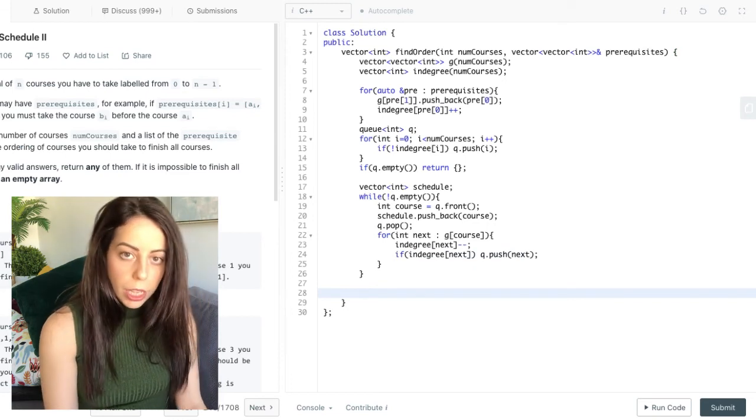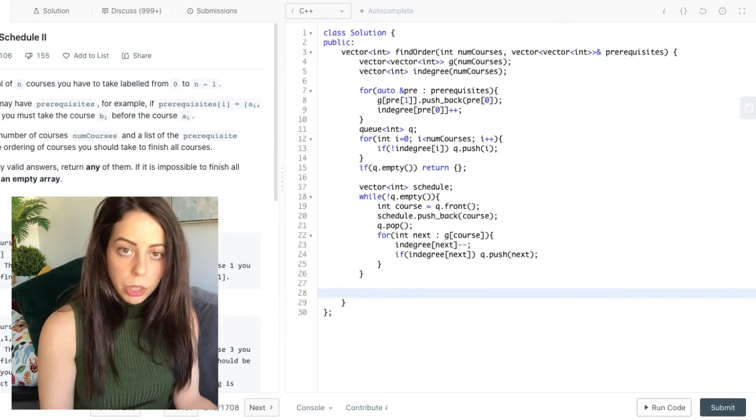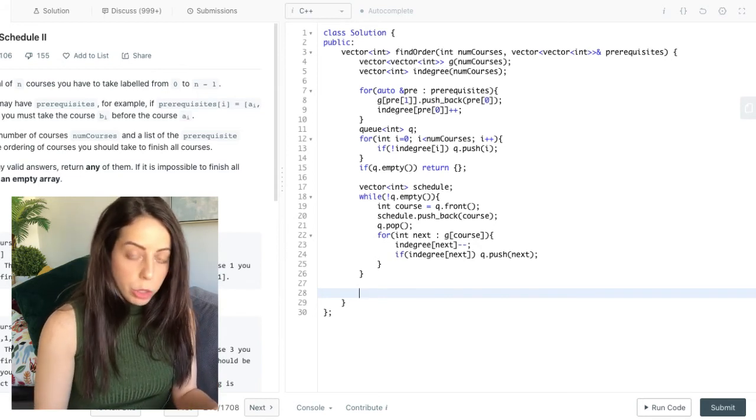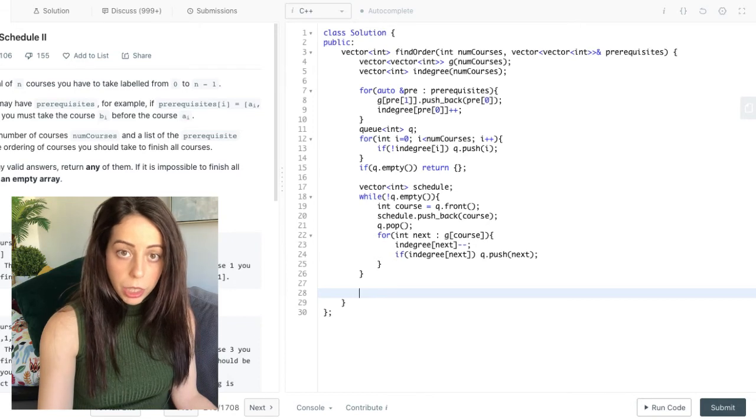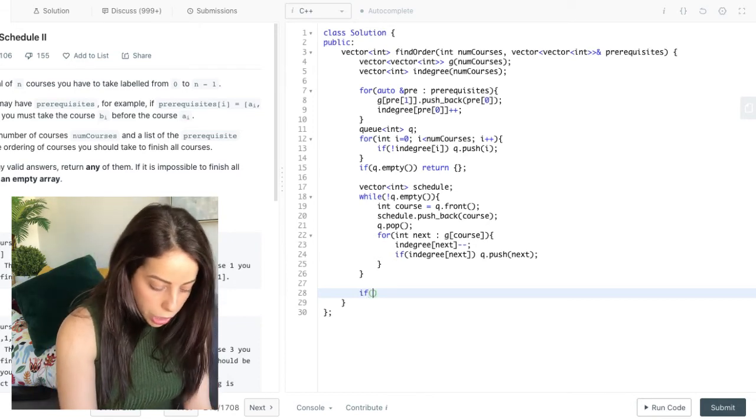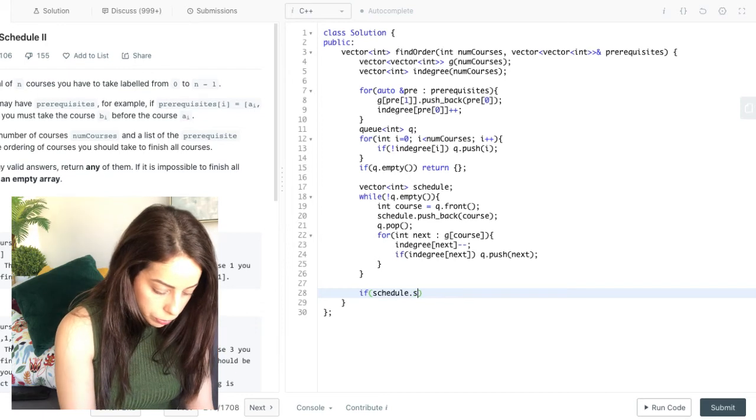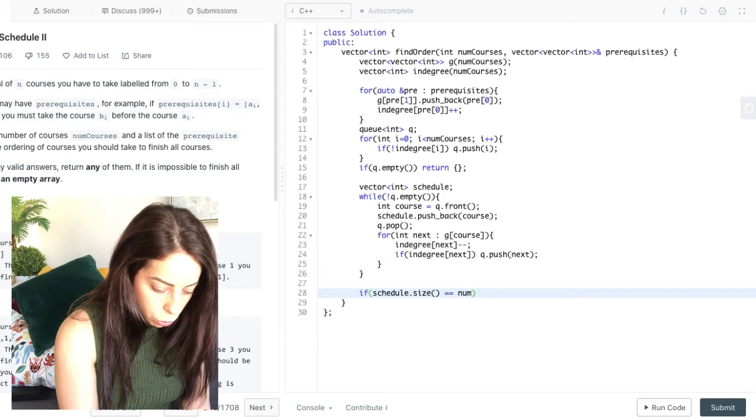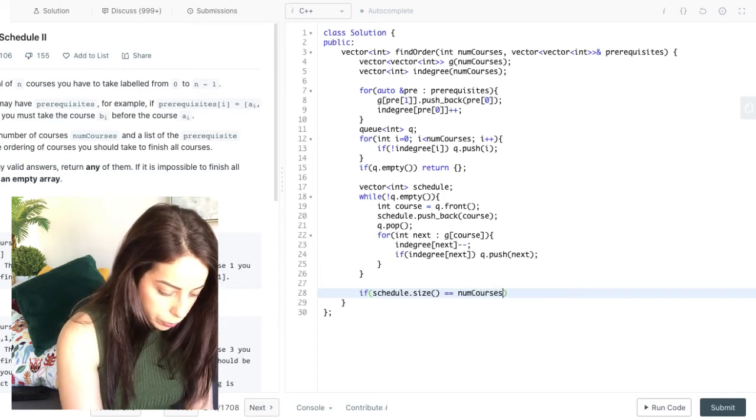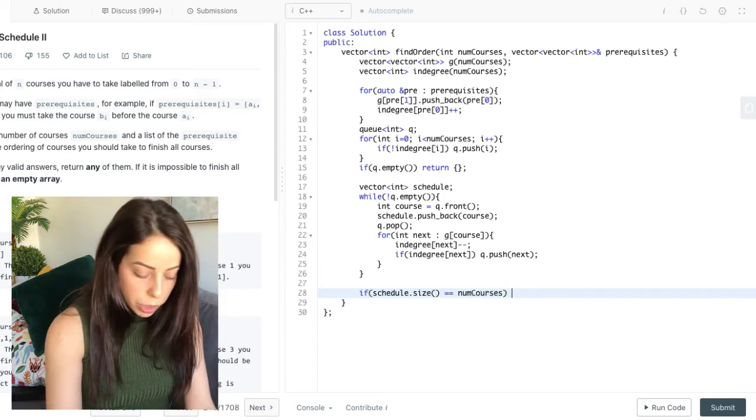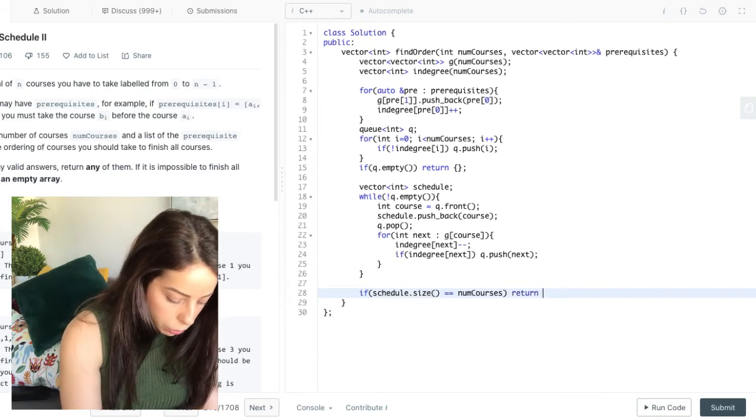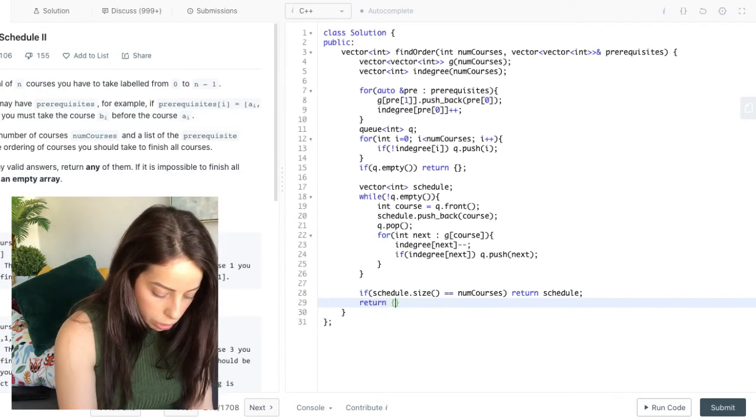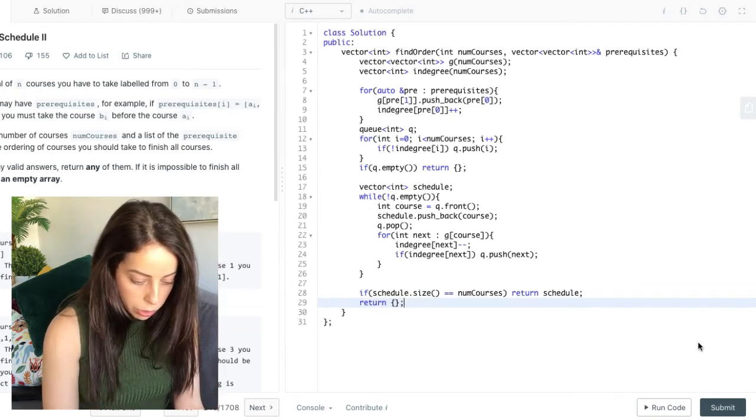Now if we get to this point, and we haven't processed all of the nodes, then that means that there is some cycle left in the graph. Which means that we can't finish all of our courses and we need to return an empty array. So at this point, we need to check if the size of schedule is the same as numcourses. And that means that we have processed all of the nodes. In this case, we can return the schedule. Otherwise, we return an empty array. Okay, so I think we're good.